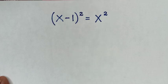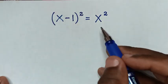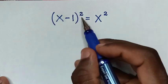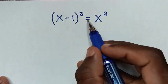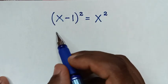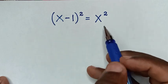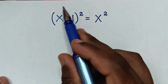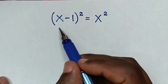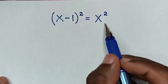Hello, you are welcome to solve this math problem which is (x minus 1) bracket squared equals x squared. We need to find the value of x from this equation. In this math problem we have almost 3 ways or 3 methods to solve it.